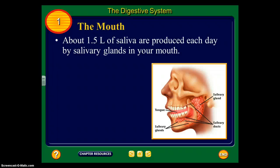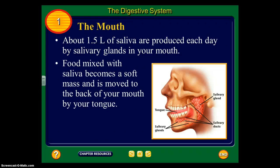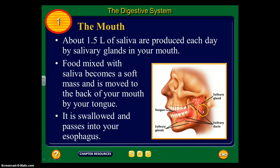Every day about 1.5 liters of saliva are produced — that's three-fourths of a two-liter bottle of pop — produced each day by salivary glands in your mouth. Food mixed with saliva becomes a soft mass and is moved back to the back of your mouth by your tongue. It is then swallowed and passes through the esophagus. We have our salivary glands, tongue, teeth, and salivary ducts which is how saliva gets into our mouth.